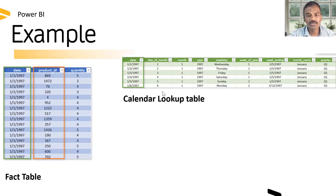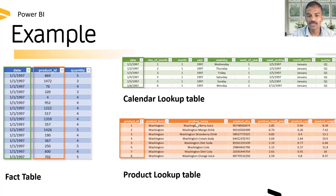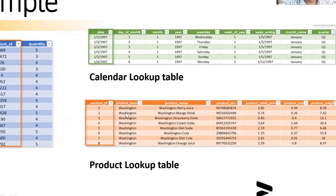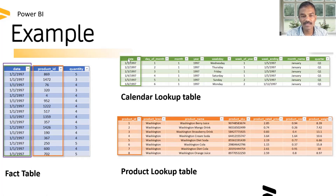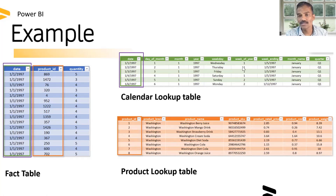We need to display this data using a product lookup table. The product lookup table contains product brand, product name, product SKU, product retail price, product cost, and product weight. We store these values in the dimension table, and you can choose the relevant common columns to display this data. The quantity sold is available in the fact table.